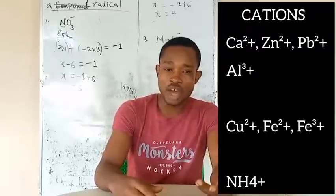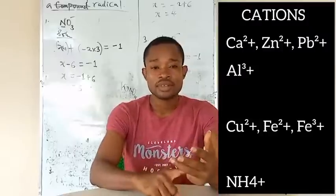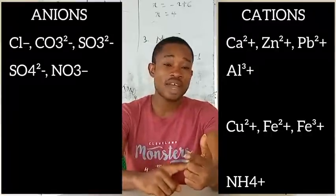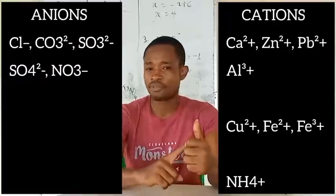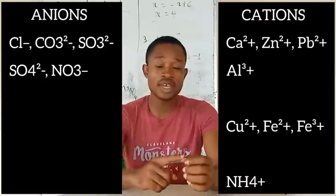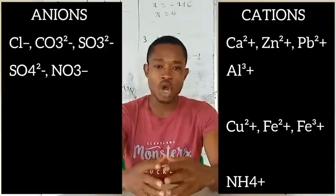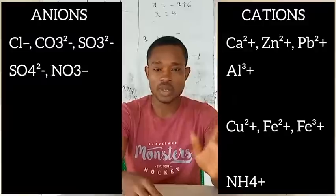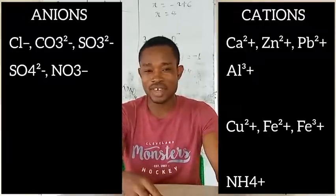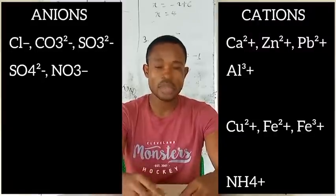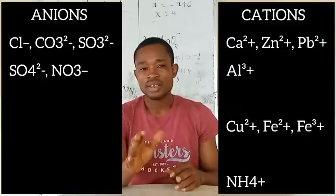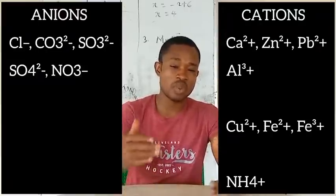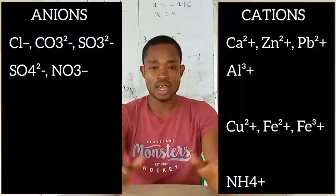Next, we are going to talk about the negative ions that a student can be tested on. We have chloride ion (Cl⁻), trioxocarbonate(IV) ion (CO₃²⁻), trioxosulfate(IV) ion (SO₃²⁻), tetraoxosulfate(VI) ion (SO₄²⁻), and trioxonitrate(V) ion (NO₃⁻). These five are the major negative ions being tested for in salt analysis. These negative ions are actually acidic radicals, and a student will be expected to prepare for confirming their presence in a particular salt sample.